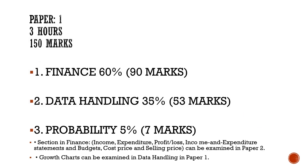Paper 1 is three hours long and out of 150 marks. It covers three topics: Topic 1, Finance, making up 60% of the paper; Topic 2, Data Handling, making up 35%; and Topic 3, Probability, consisting of 5%. In marks, Finance will be 90 marks, Data Handling 53 marks, and Probability plus-minus 7 marks.